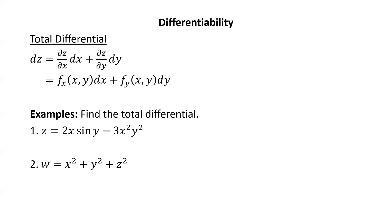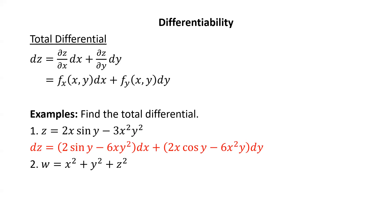Let's try some examples — compute the total differential. For z equals 2x sine y minus 3x² y², dz is the partial with respect to x, which is (2 sine y minus 6xy²) dx, plus the partial with respect to y, which is (2x cosine y minus 6xy) dy. For the second example with w as a function of three variables, dw is the partial with respect to x times dx plus the partial with respect to y times dy plus the partial with respect to z times dz, giving 2x dx plus 2y dy plus 2z dz.